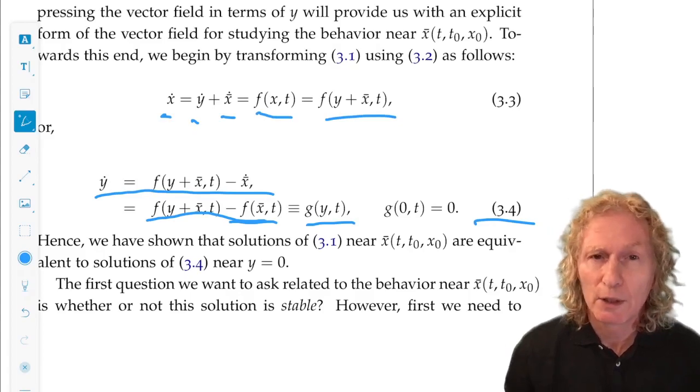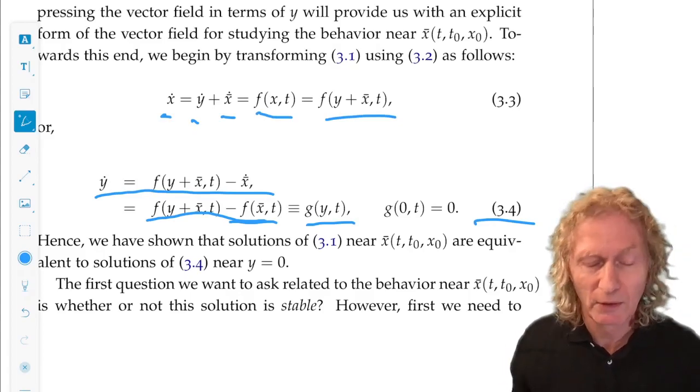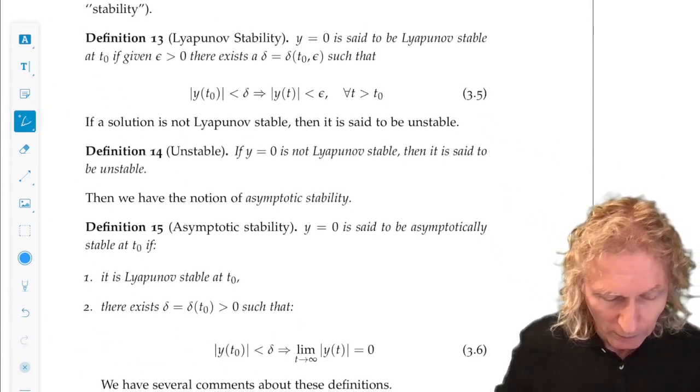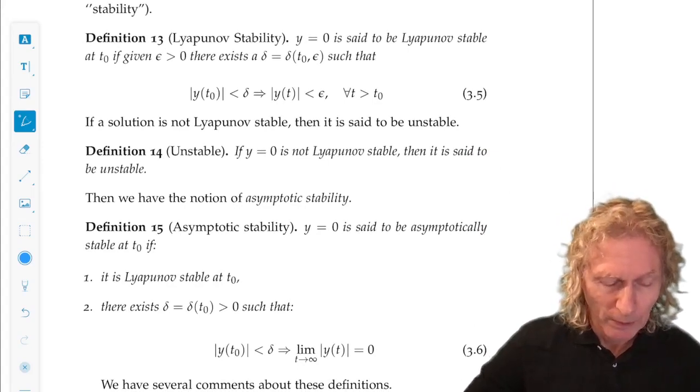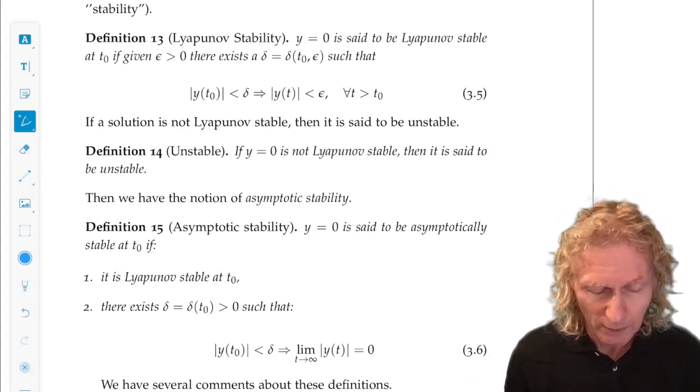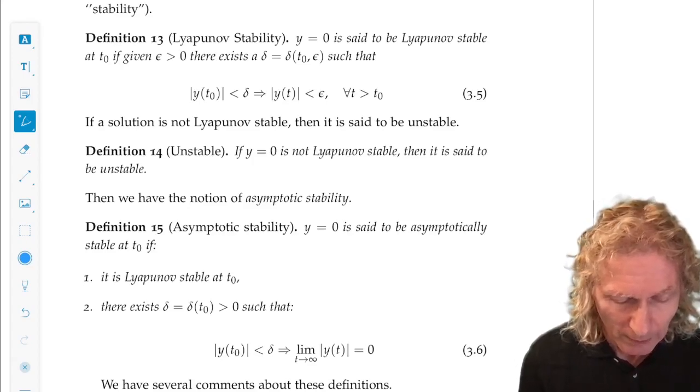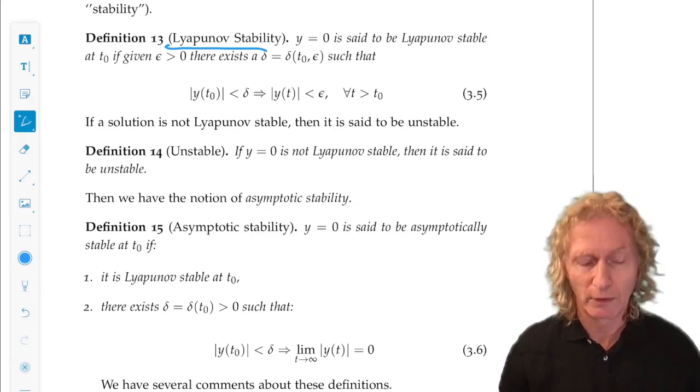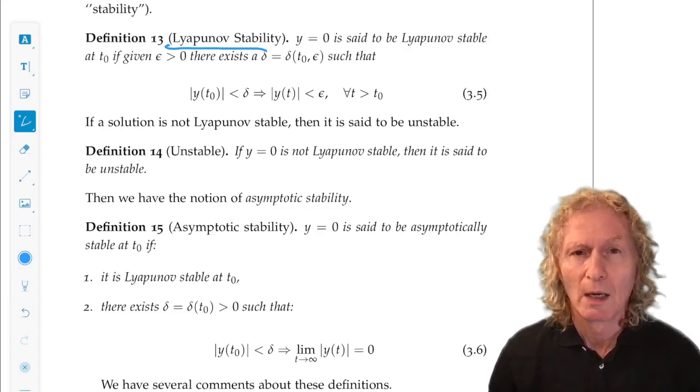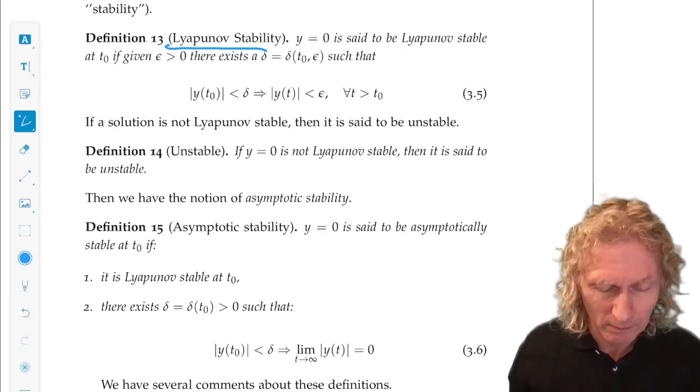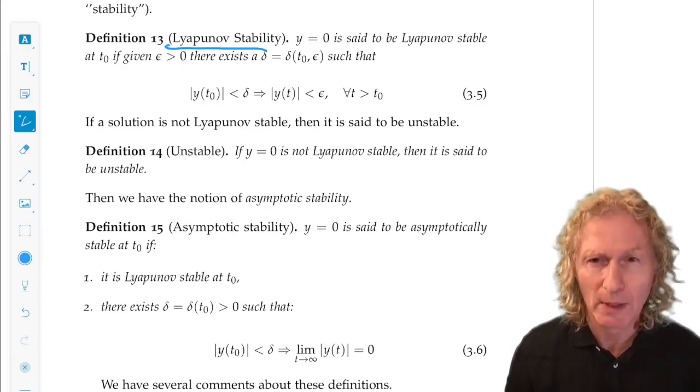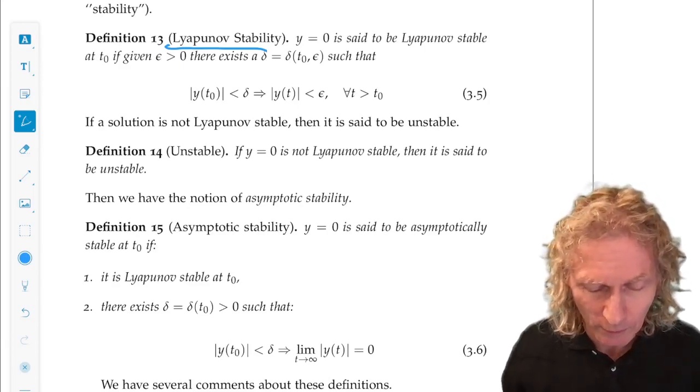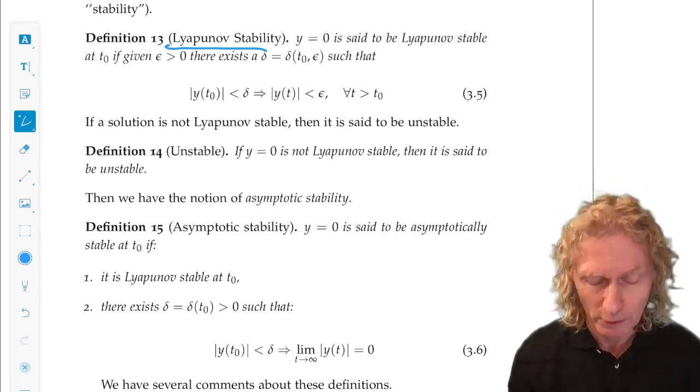So first we need definitions of stability. This is a big subject. There are many definitions, but the most common ones we're going to use in this course are here. The first definition, 13, is that of Lyapunov stability. Sometimes people leave off the name Lyapunov and just say stability for the same concept. That's unfortunate. Lyapunov was a major contributor to this entire theory. In fact, he essentially developed it, the first developer of the theory of stability for differential equations.